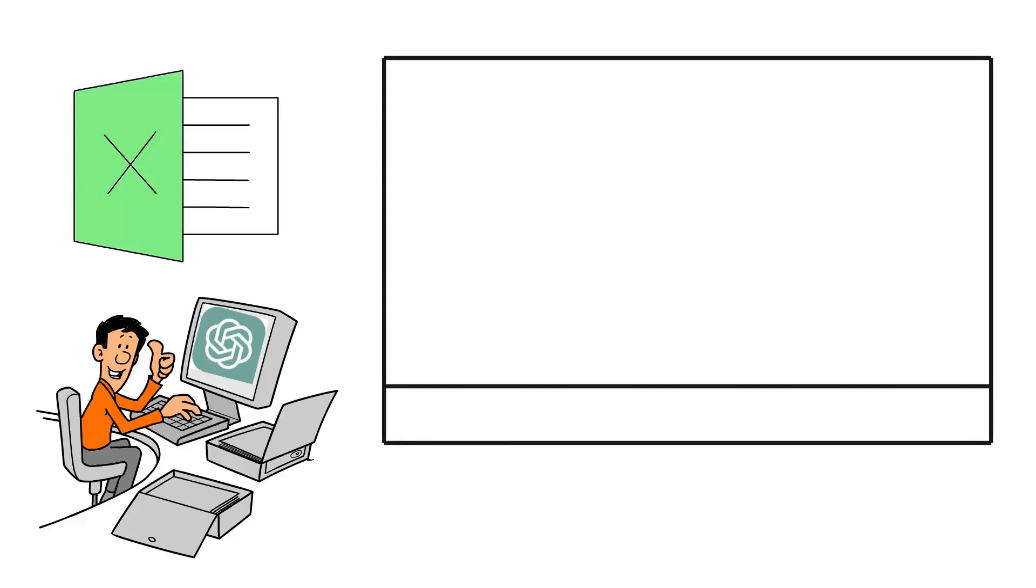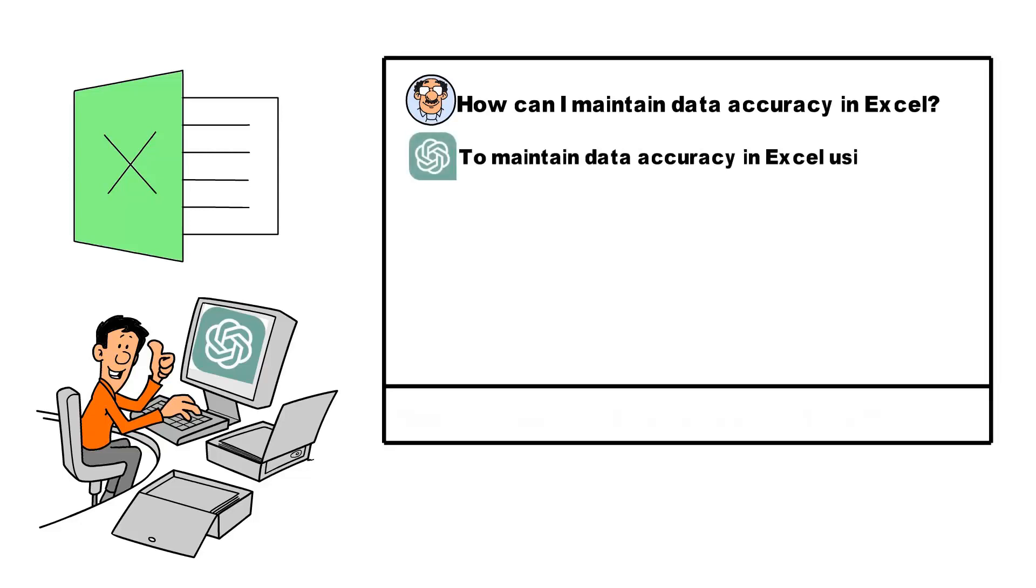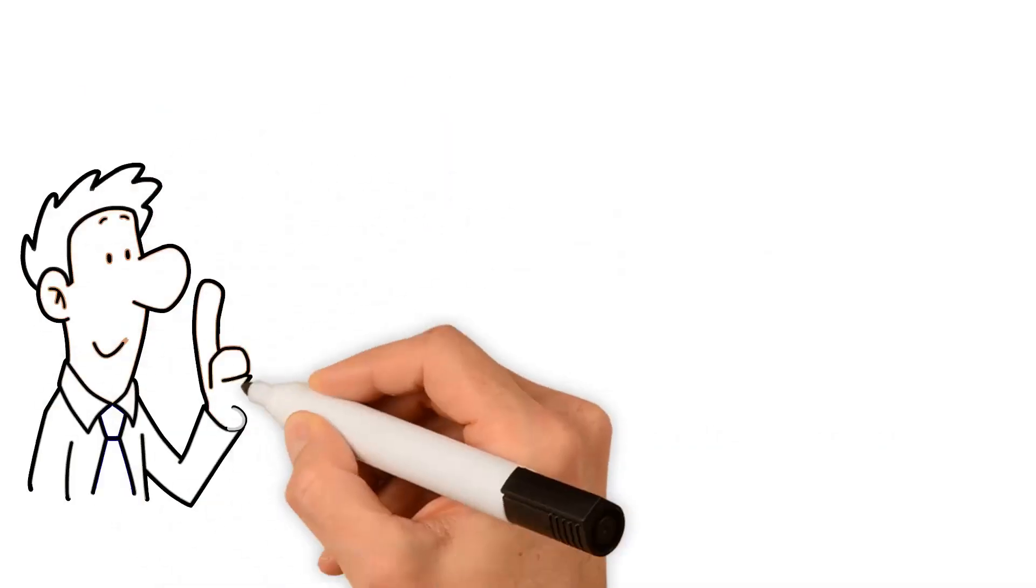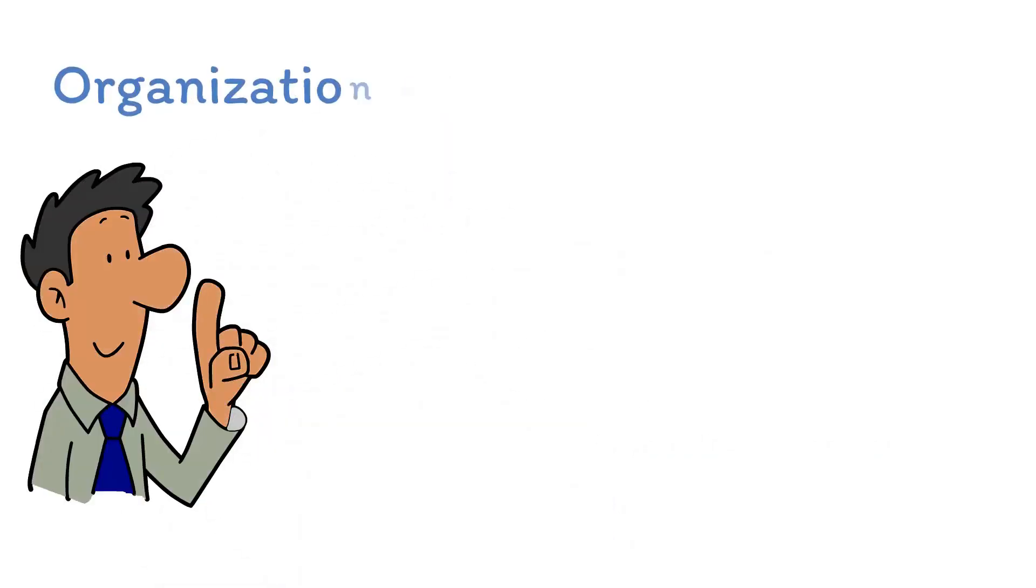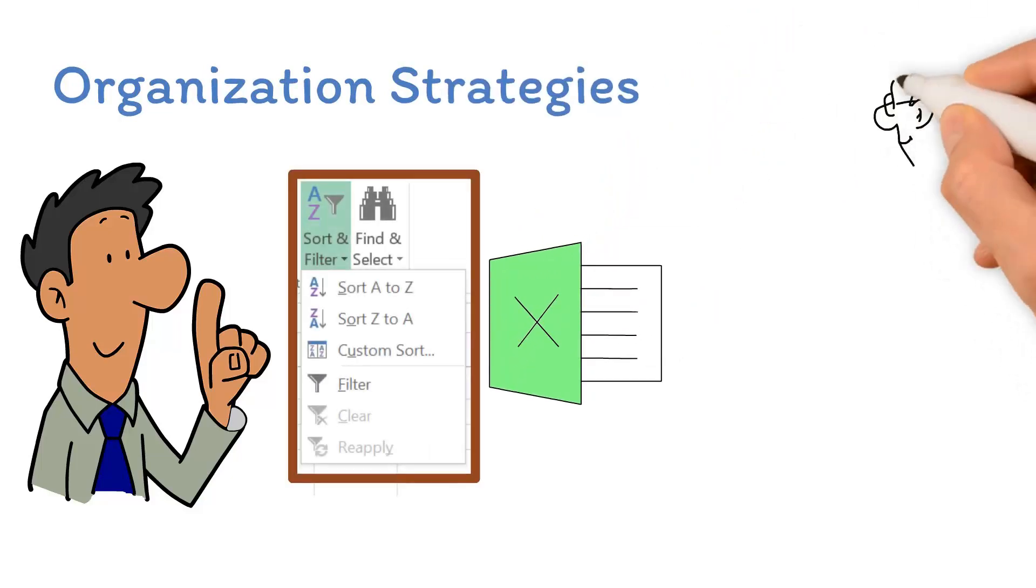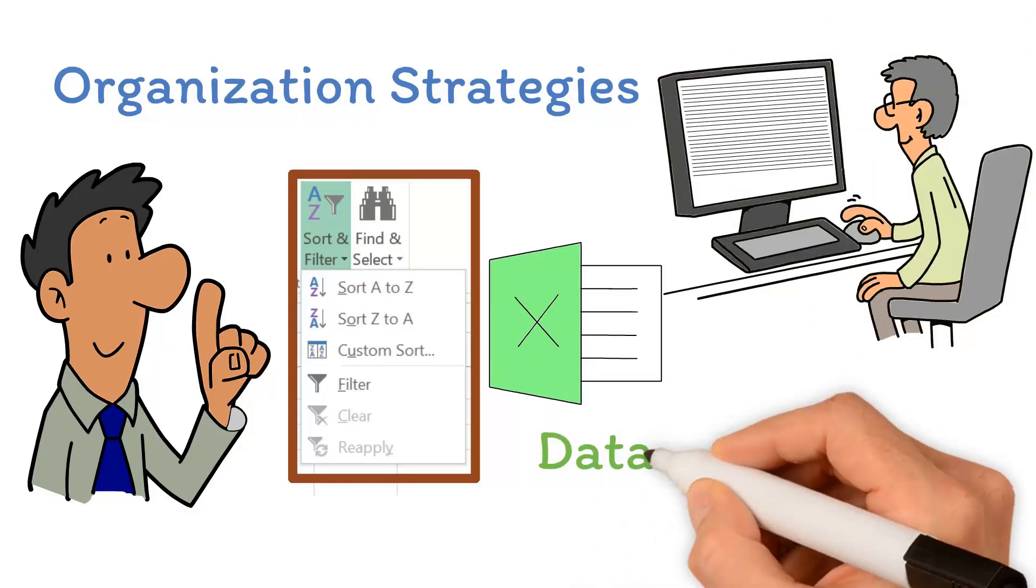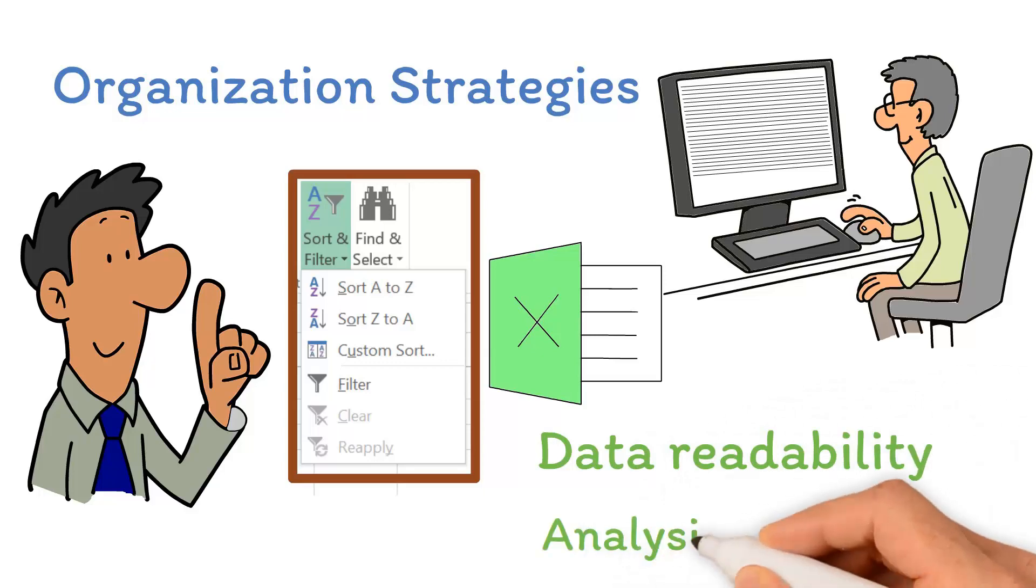To learn about best practices, you might ask, how can I maintain data accuracy in Excel? ChatGPT might advise you to utilize data validation to restrict the type of data or values users can enter into cells, and could guide you through the steps to set up data validation rules. Furthermore, asking about organization strategies could yield advice like using Excel's Sort and Filter feature to maintain a neatly ordered data set, which can significantly enhance data readability and analysis speed.